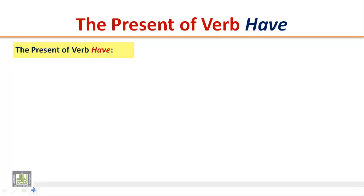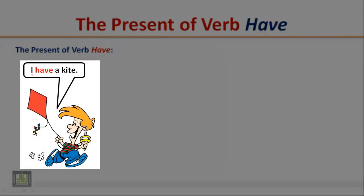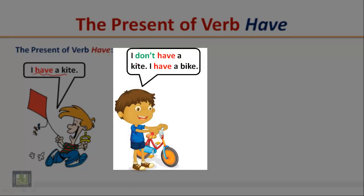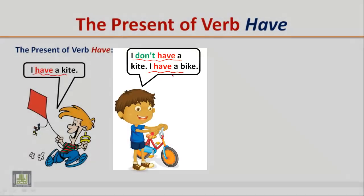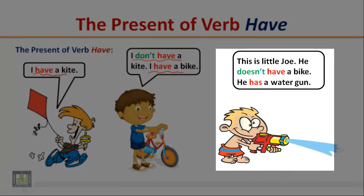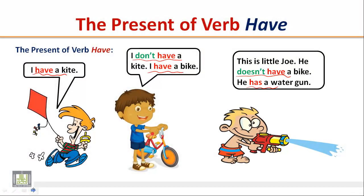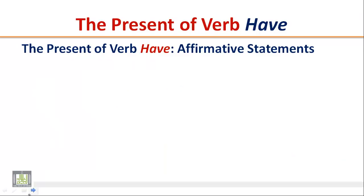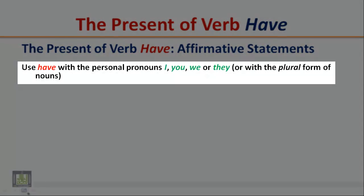I have a kite. I don't have a kite. I have a bike. This is little Joe — he doesn't have a bike. He has a water gun.